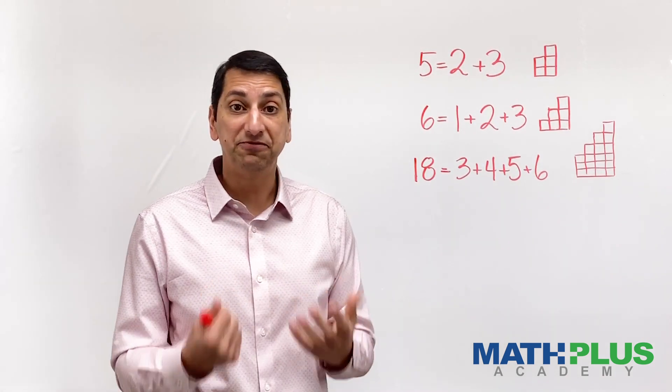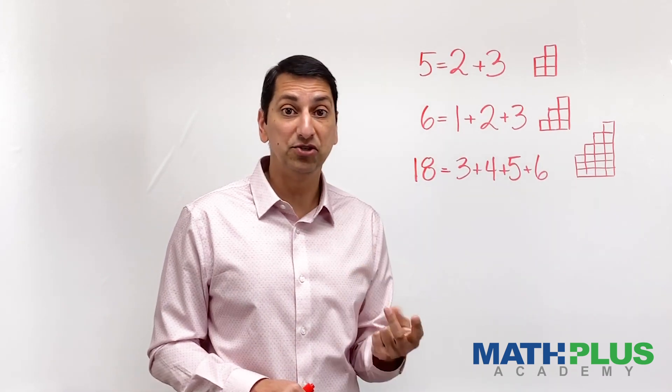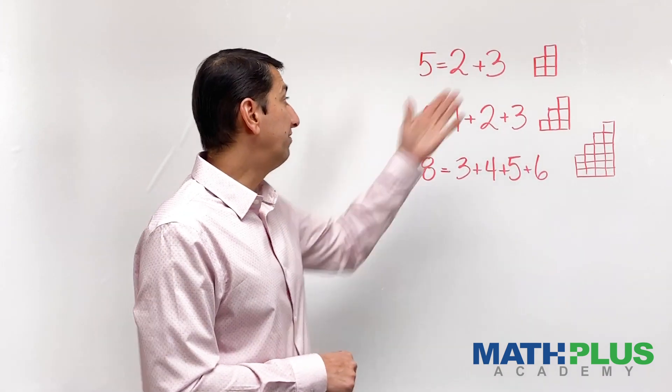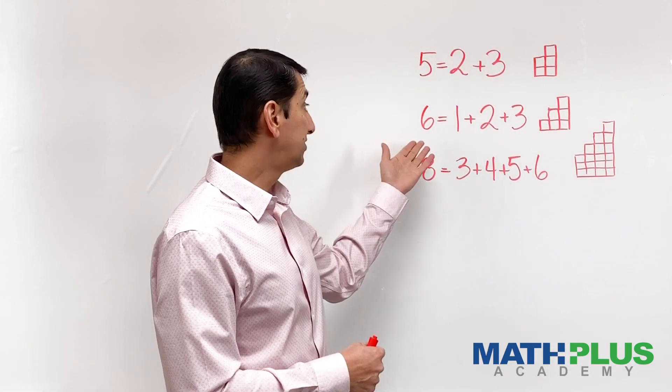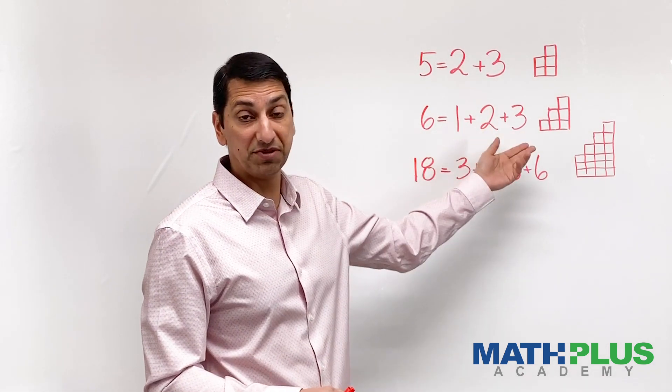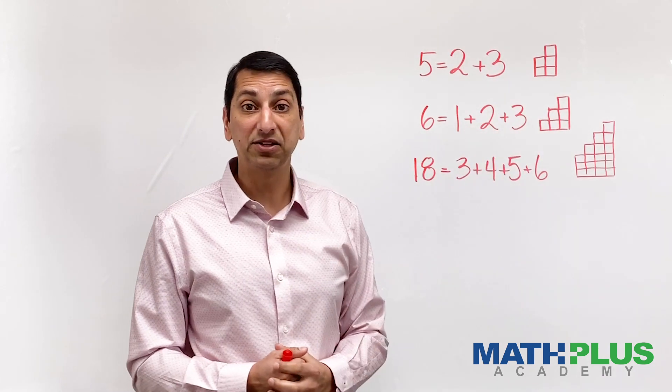At the top here, I have 5, which I could write as 2 plus 3. And I have a picture of what that might look like over there on the right. Then I have 6, which I could write as 1 plus 2 plus 3. And again, I have a picture of what that could look like.